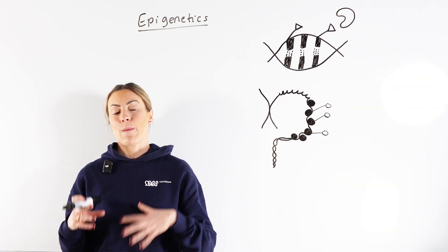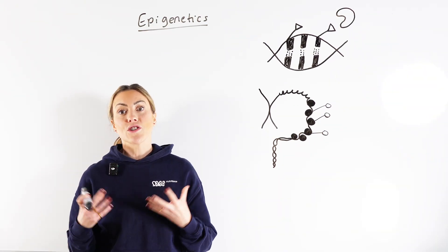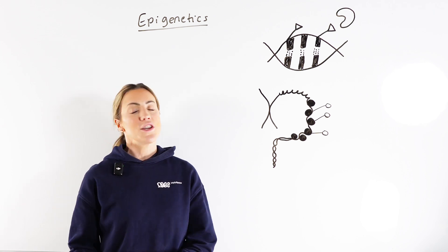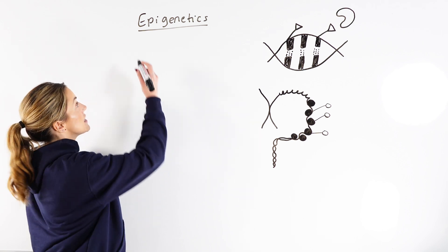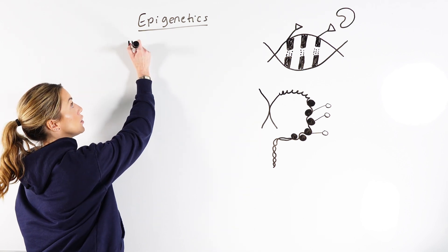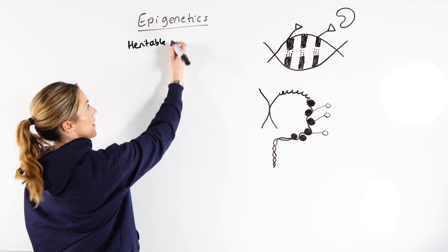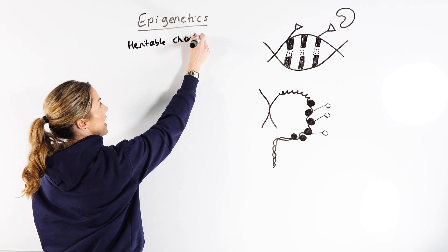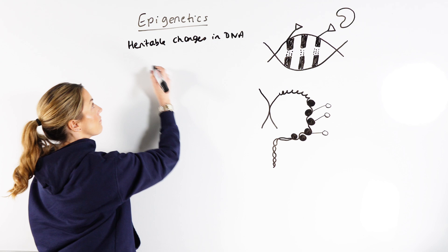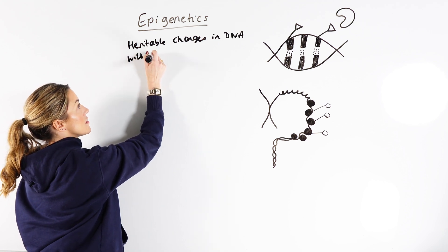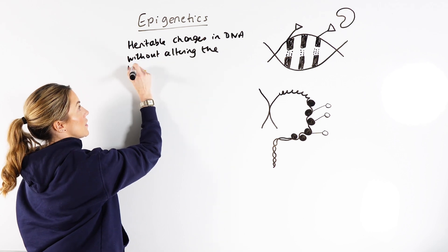In this video, we're going to try to explain epigenetics. Firstly, what does epigenetics mean? Because you could be asked for a definition. Epigenetics means heritable — so can be passed on to offspring — heritable changes in DNA without altering the base sequence.